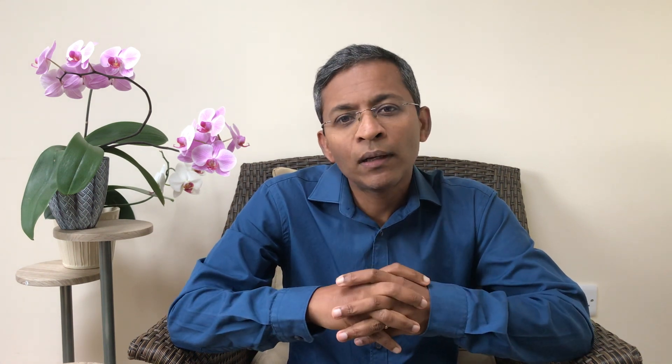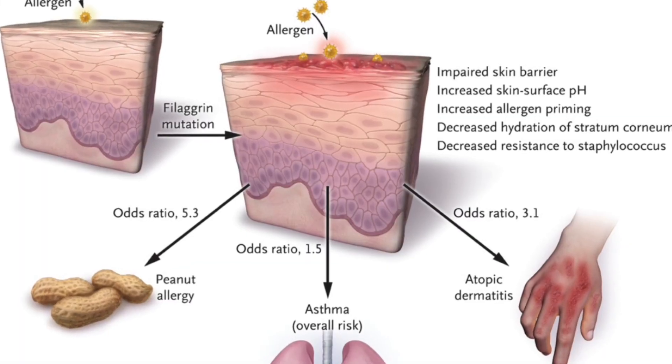In a New England Journal of Medicine review published a few years ago, the authors clearly explained the relationship between filaggrin deficiency and the atopic march. In healthy skin, due to an intact barrier, allergens are not able to penetrate into the skin. In filaggrin deficiency, the skin is more permeable and allergens penetrate the skin, which predisposes to an inflammatory reaction. This in turn increases the risk of atopic eczema, peanut allergy and asthma.